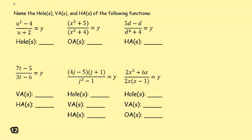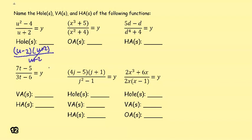Name the holes, vertical asymptotes, and horizontal asymptotes for the following functions. For y = (u² - 4) / (u + 2), the first thing we do is factor it. This is a difference of squares, so we get (u - 2)(u + 2). The u + 2 cancels, so there is a hole at u = -2.